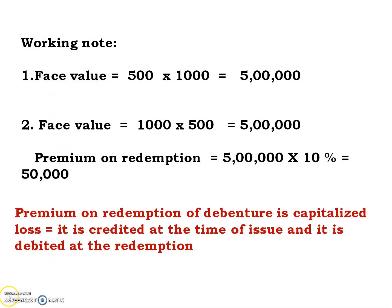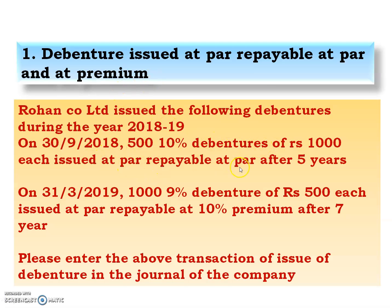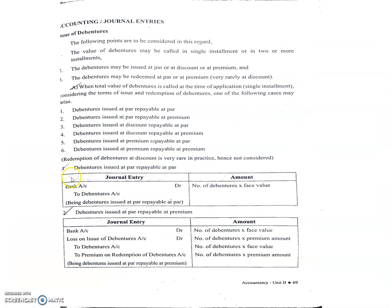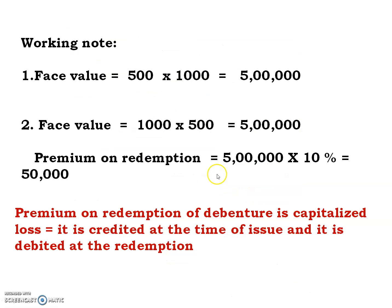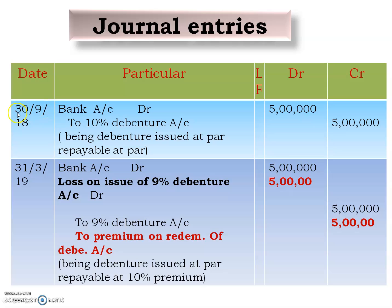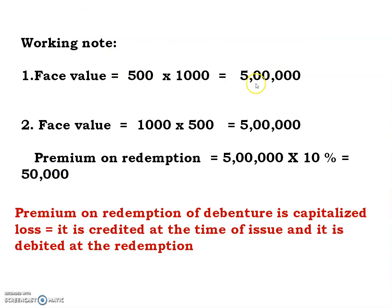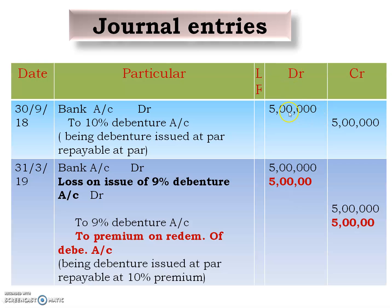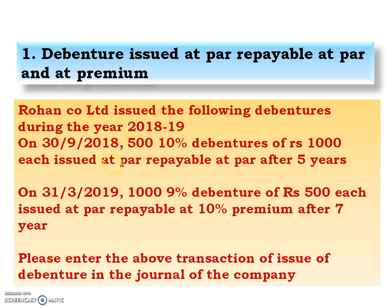When debentures are issued at par and repayable at par, the journal entry is: Bank Account debit, to Debenture Account, with the amount equal to face value. So the entry dated 30th September 2018 is: Bank Account debit to 10% Debenture Account — rupees 5 lakh on the debit side and rupees 5 lakh on the credit side. Narration: being debentures issued at par and repayable at par.